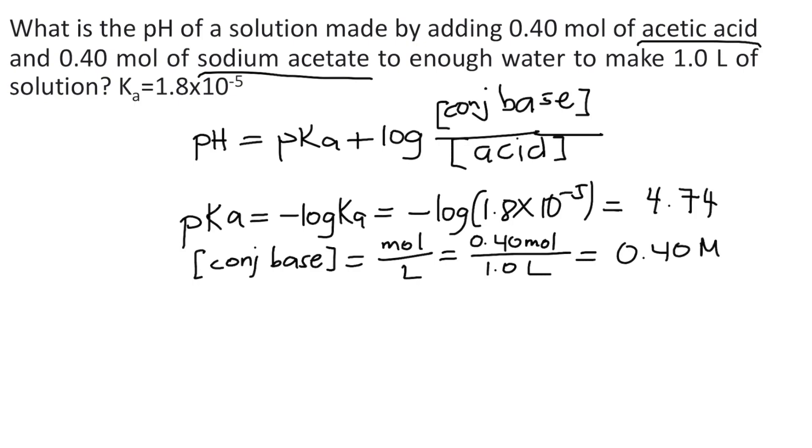And we'll do the same thing with our weak acid. So that's moles per liter. So in the problem, we are given 0.40 moles divided by 1 liter. So that's also 0.40 molar. Now that we have the pKa and our concentrations, we can now go back to the Henderson-Hasselbalch equation.